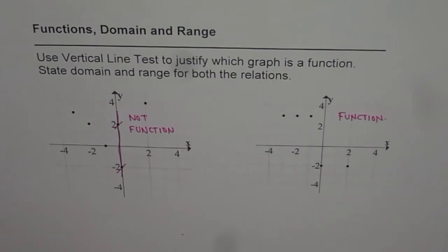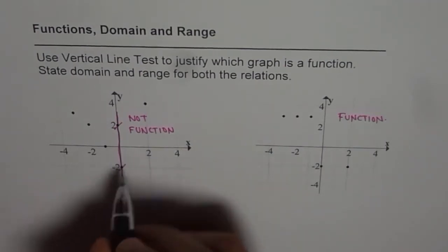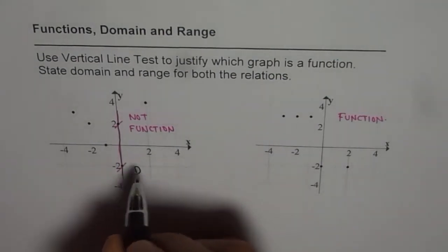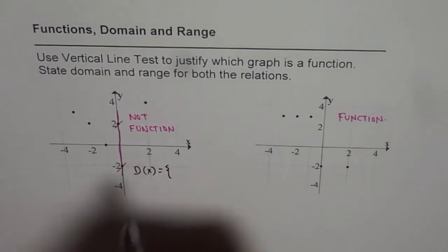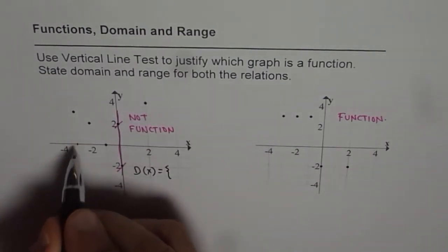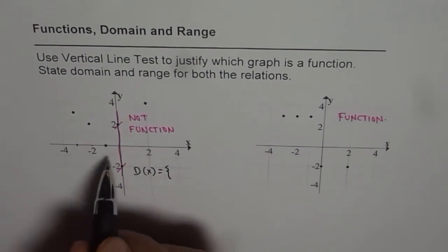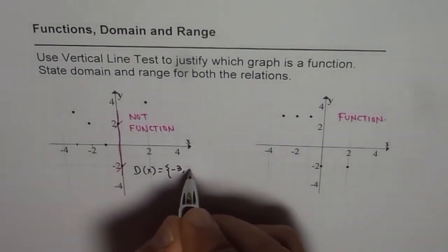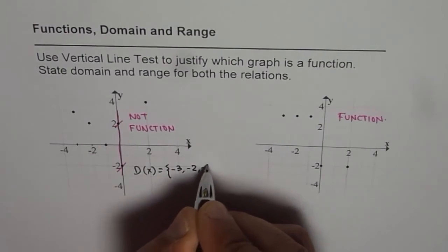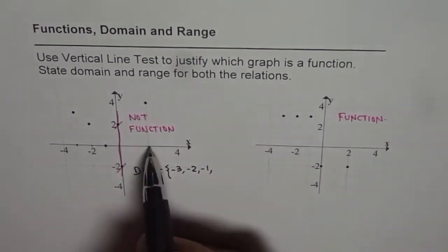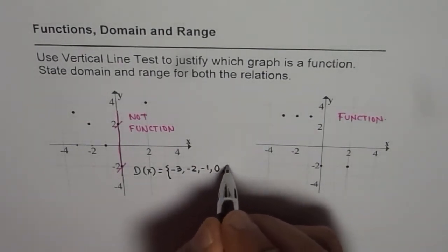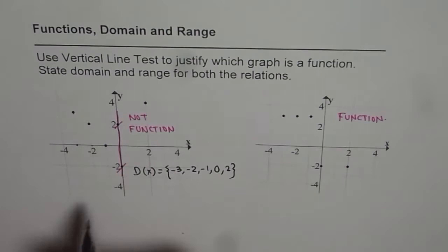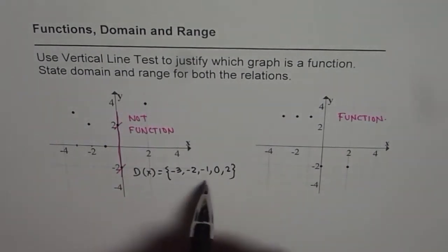Now let us write down domain and range for both the relations. Domain here is the set of x values. The domain of this relation is all these x values. So this x value is minus three, then we have minus two, minus one. And this point corresponds to two, and then zero also. So we have zero and two. So D(x) = {-3, -2, -1, 0, 2}.